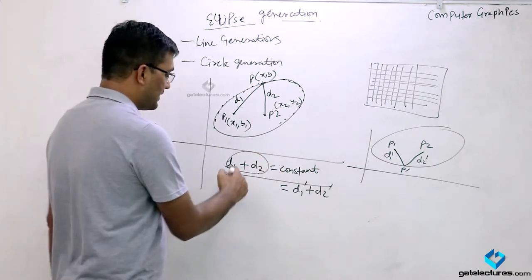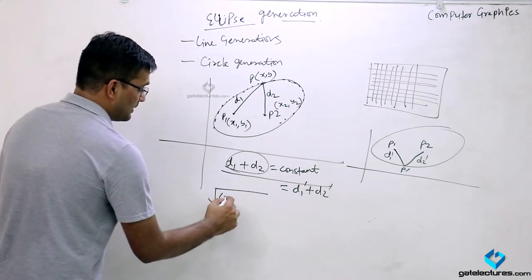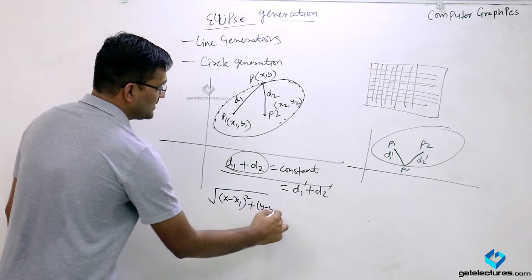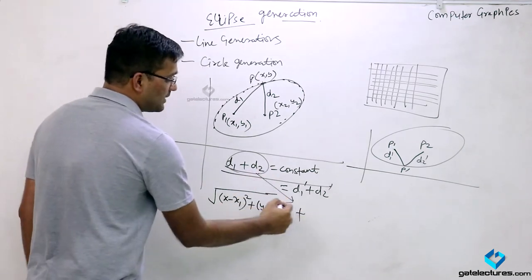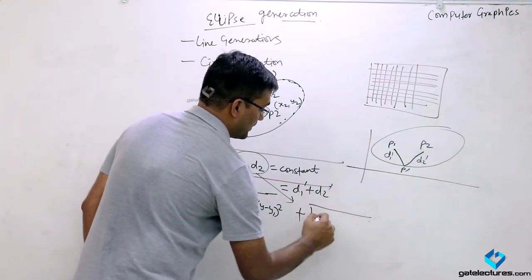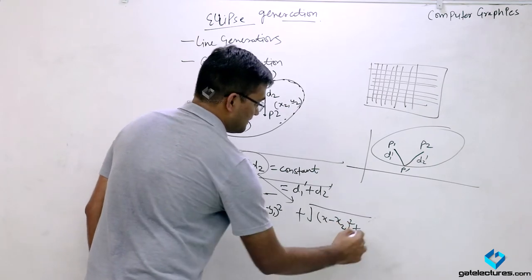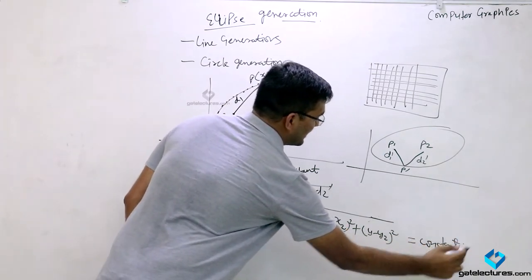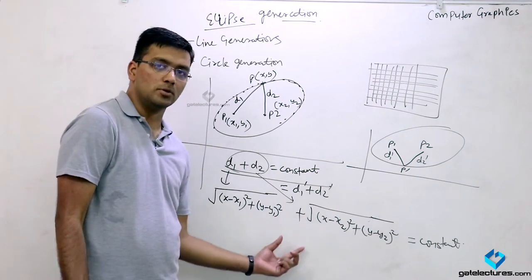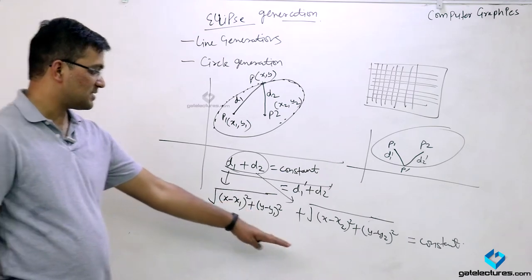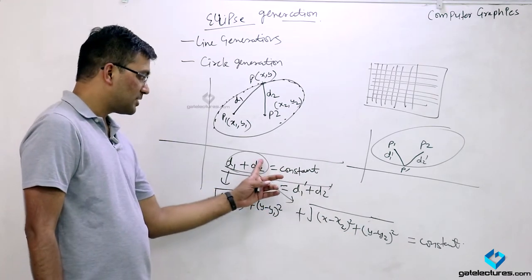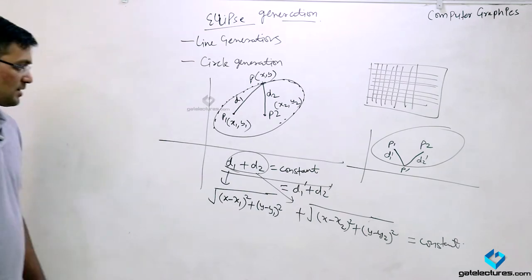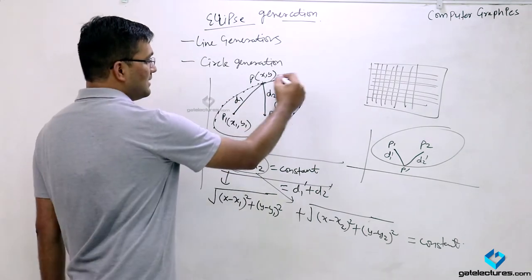What will be the equation for D1 and D2? It would be the square root of (x minus x1) squared plus (y minus y1) squared for D1, and the square root of (x minus x2) squared plus (y minus y2) squared for D2, and their sum equals a constant. This is the formula to find the distances D1 and D2 — the summation of both will be constant. This is a property of the ellipse through which I can find out the points.